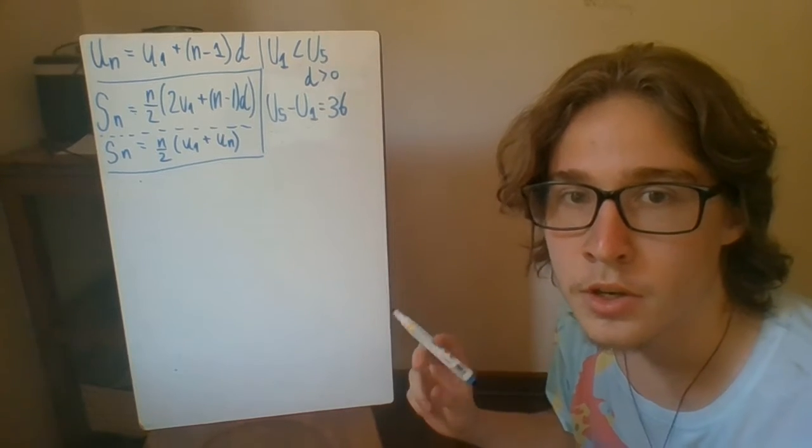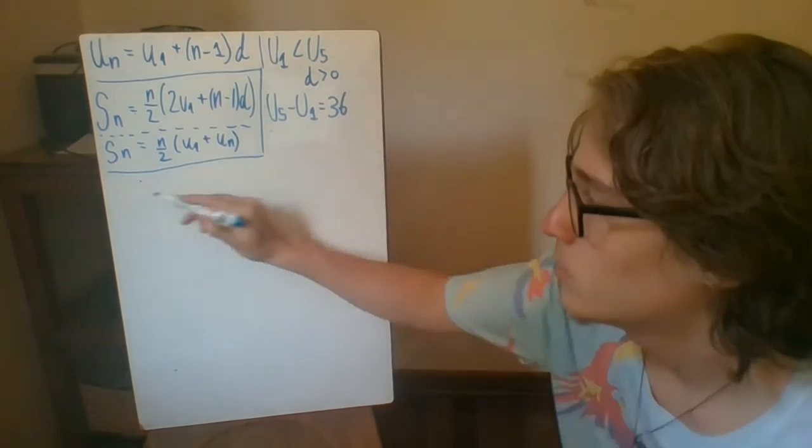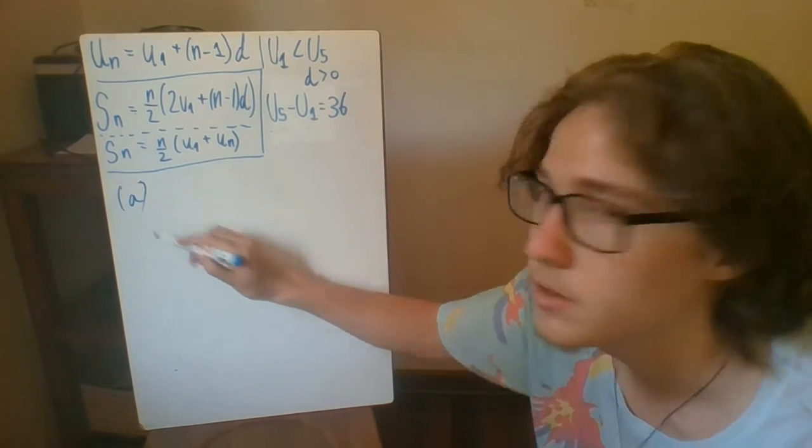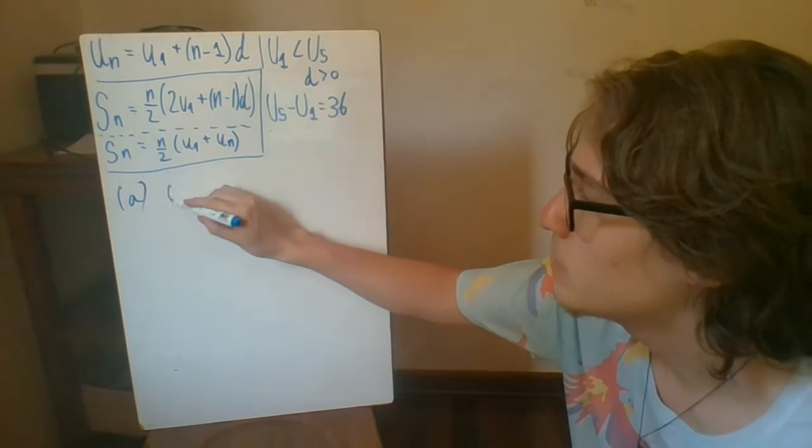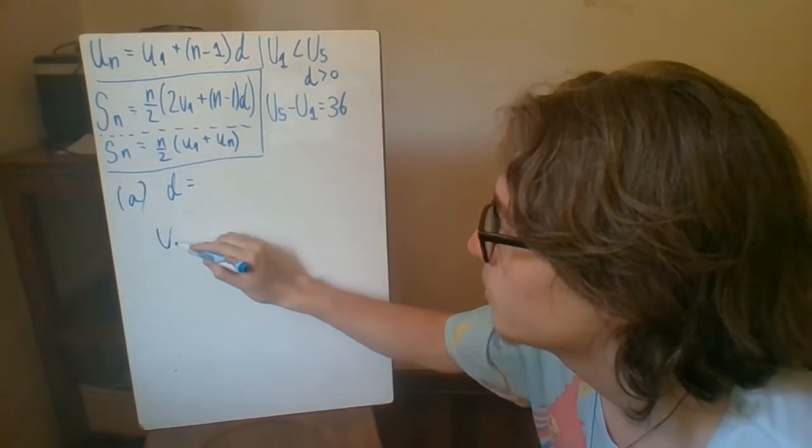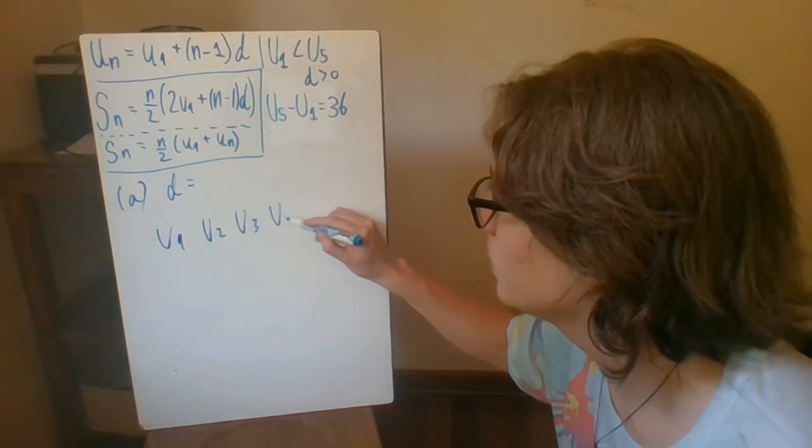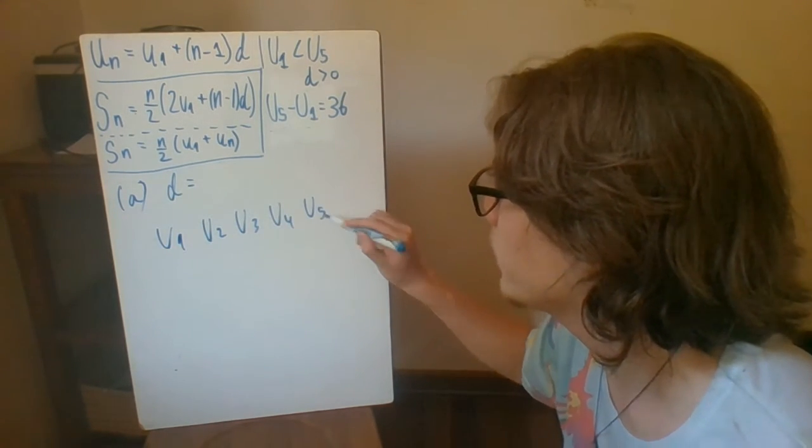And so they also give us that u5 minus u1 is 36. So part a asks us to find the common difference, d. And so with all sequences, I feel like it's always good to have a diagram. So here I write down u1, u2, u3, u4, u5.